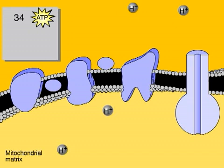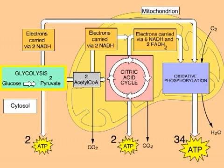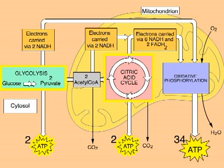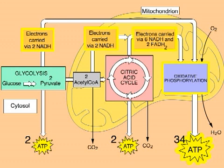This illustration summarizes cellular respiration. Glycolysis and the citric acid cycle produce a small amount of ATP via substrate-level phosphorylation, but most of the cell's ATP is made via oxidative phosphorylation, when NADH and FADH2 produced in glycolysis and the citric acid cycle give up to oxygen the electrons obtained from organic molecules.